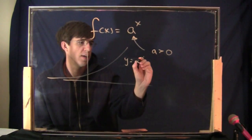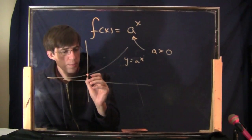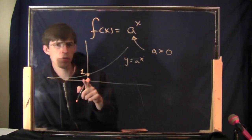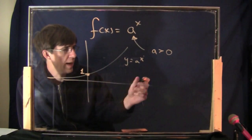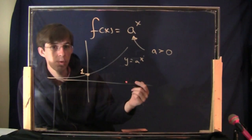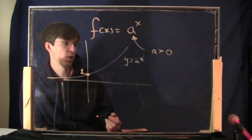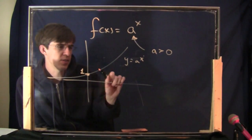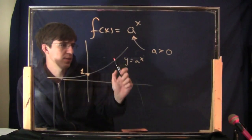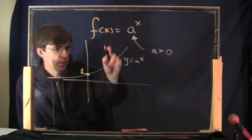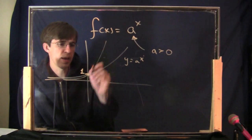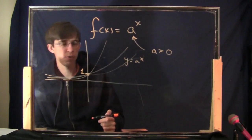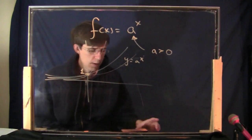All exponential functions go through the y-value 1. That's because plugging in x equals 0 gives you a to the 0, which is 1 — anything to the 0 power is 1. Depending on the value of a, the graph is either steeper or less steep. A larger a would be steeper, and a smaller a would be less steep, but all exponential functions basically look like this shape.